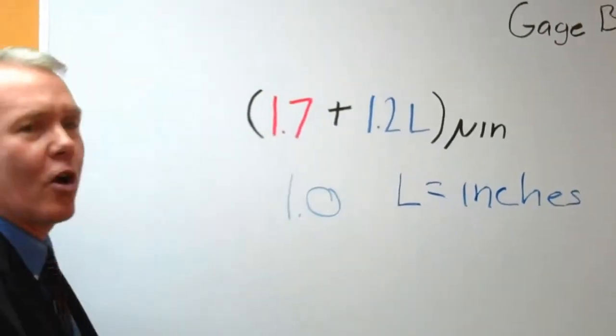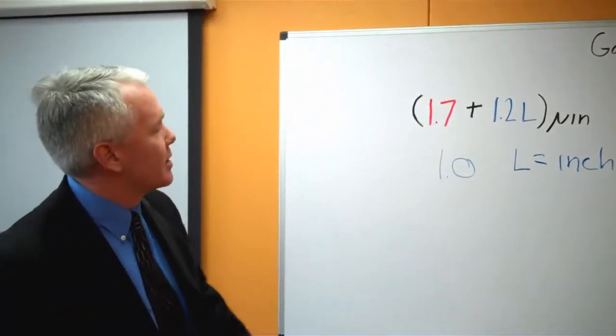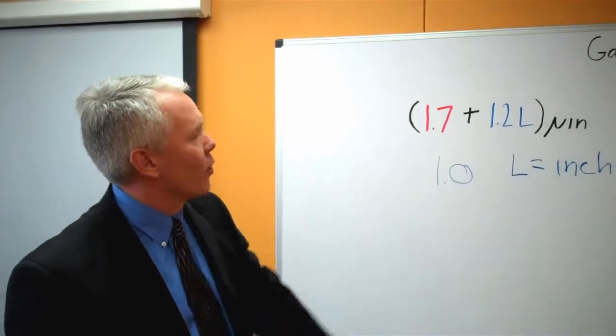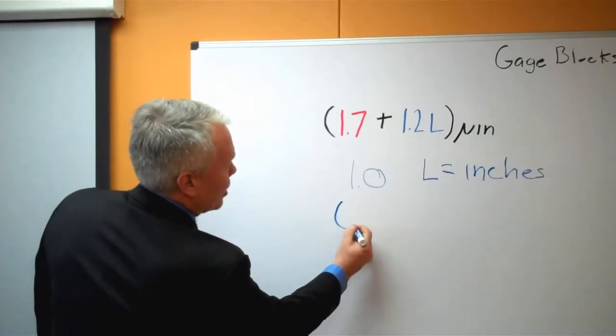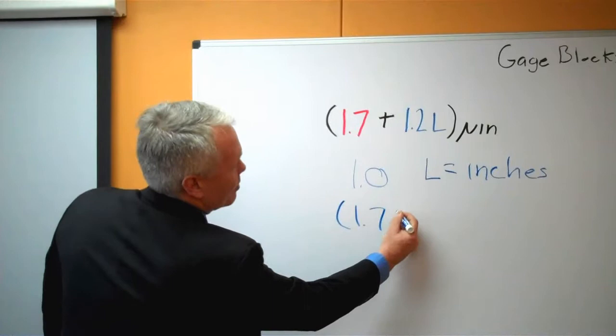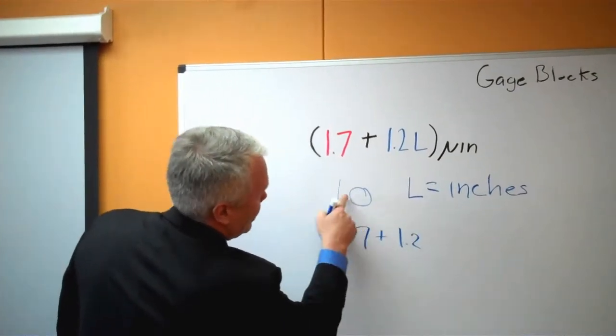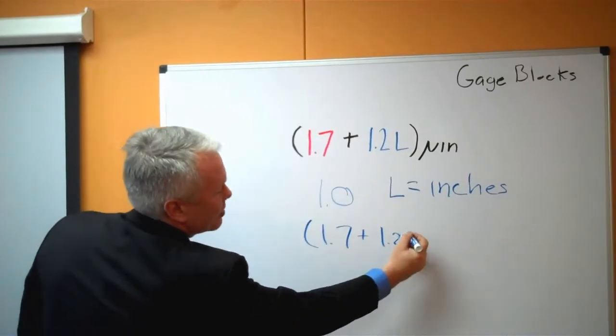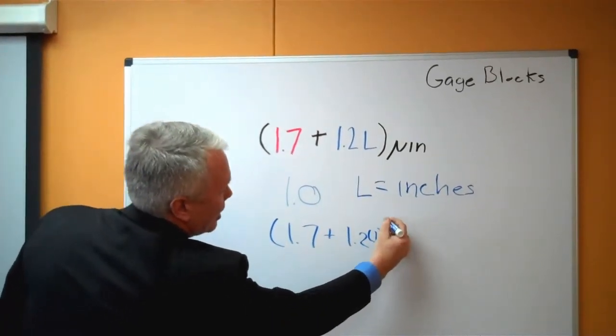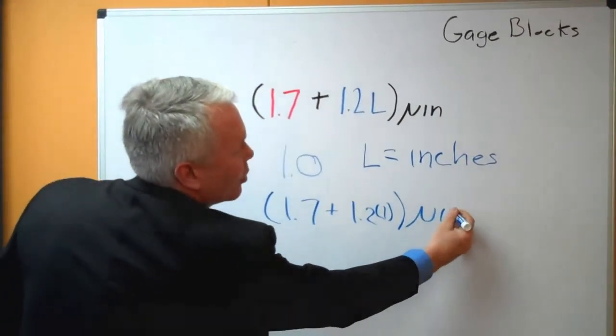So now that we know what unit the formula is in, we can simply plug the 1.0 into the formula. And you rewrite this formula as 1.7 plus 1.2 times L, which happens to be one inch. Unit still is in micro inches.